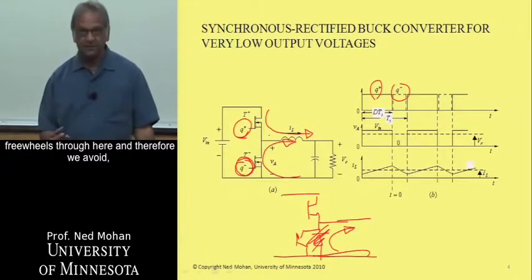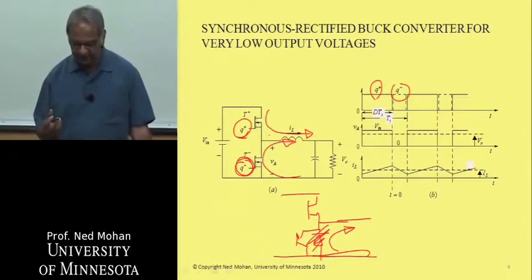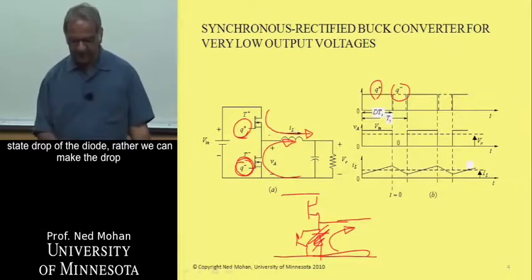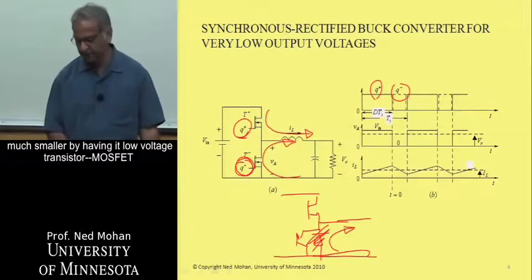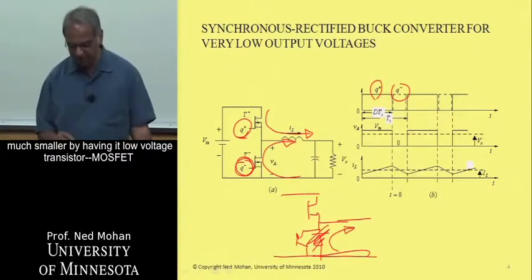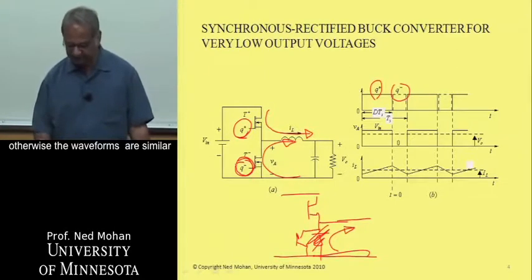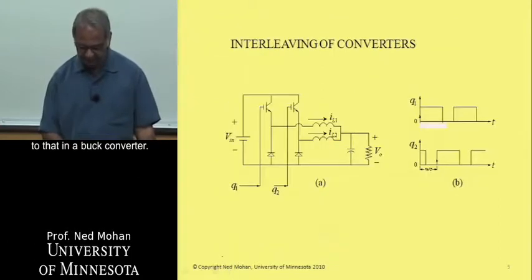And therefore, we avoid the finite on-voltage state drop of the diode. Rather we can make the drop much smaller by having a low-voltage transistor MOSFET, which has a very low on-state resistance. Otherwise, the waveforms are very similar to that in a buck converter.